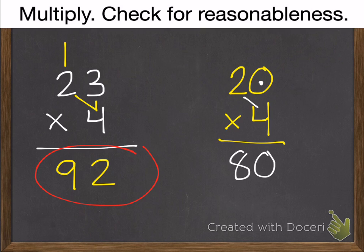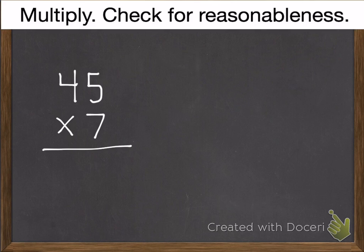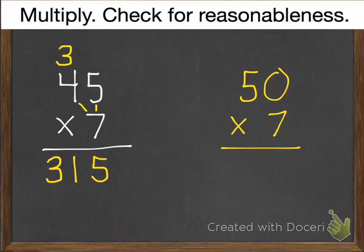Practice problem number 2. Multiply 45 times 7. Then check for reasonableness. Go ahead and pause. Okay. 7 times 5 is 35. 7 times 4 is 28. 8 plus 3 is 29, 30, 31. And let's check it. 50 times 7 is 350. So I'd say that's reasonable.